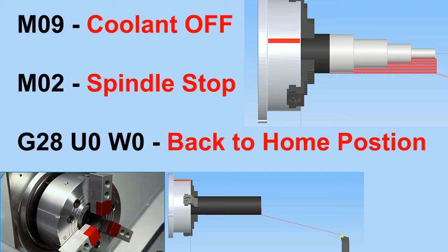In the next step we cut the coolant from the nozzle using M09, and in step 8 we stop our spindle from rotating using M05. In step 9 we lift our tool in the positive direction up to a safe point, then using G28 U0 W0 we bring the tool back to the home position.